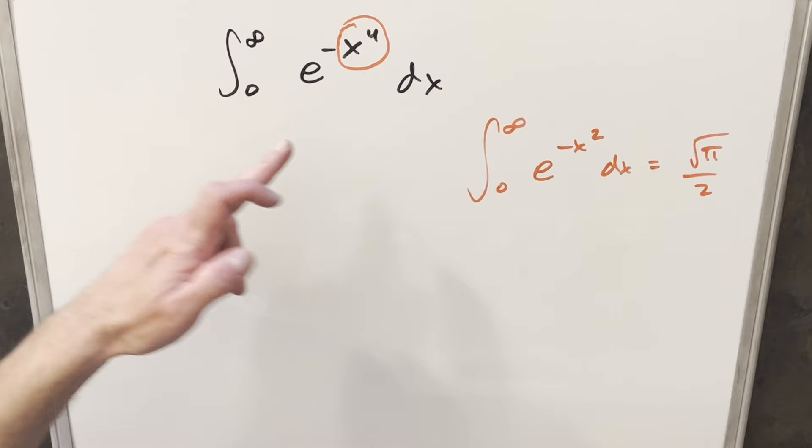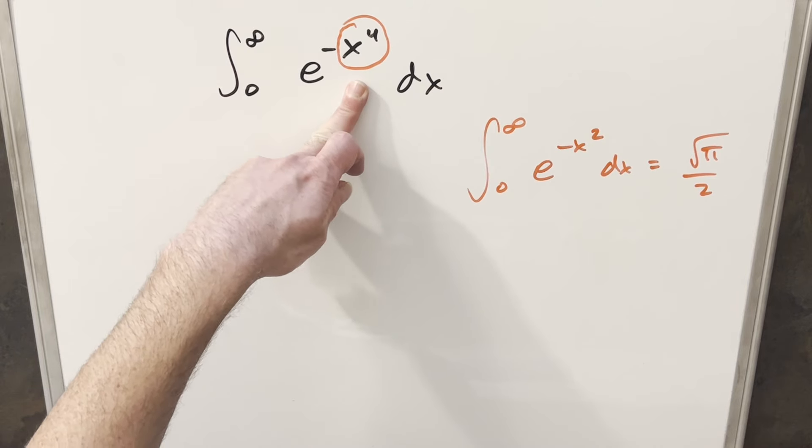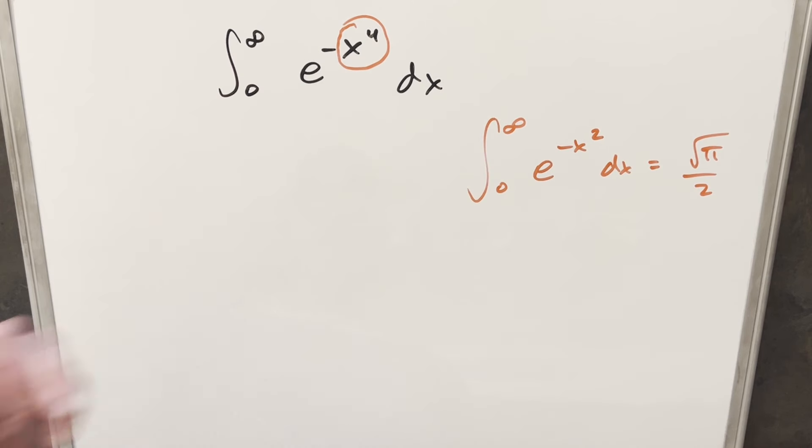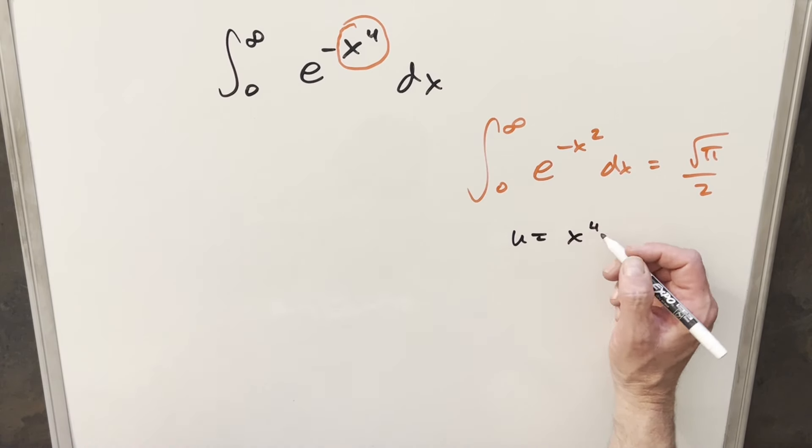So when I first did this, I did a u substitution for x squared in order to get it in this form. The only thing is when you do the u substitution and take the derivative, you get some other stuff. It didn't really work out that nicely for me. So what I want to try instead, instead of substituting u equal to x squared, I'm going to do u equal to x to the 4th.